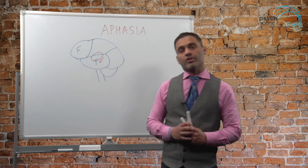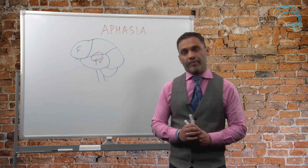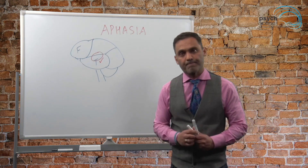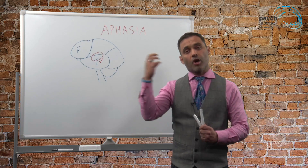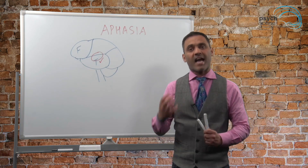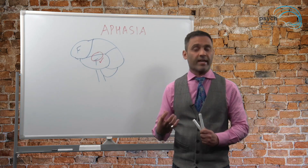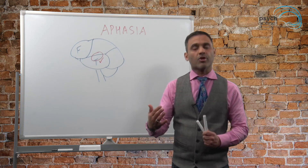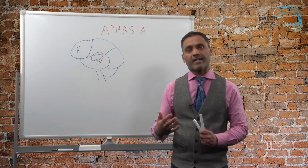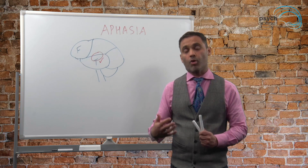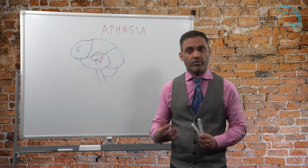As you could see in that video, there's no issues with fluency, but the comprehension is actually affected. So when comprehension is affected but fluency is okay, that is known as Wernicke's aphasia, receptive aphasia, or sensory aphasia.